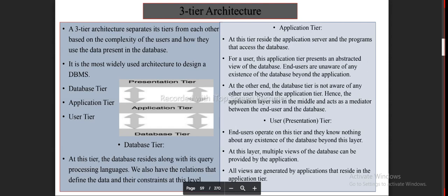Three-tier architecture: A three-tier architecture separates its tiers from each other Based on the complexity of the users and how they Use the data present in the database. It is the most widely used architecture to design a DBMS: database tier, application tier, user tier.